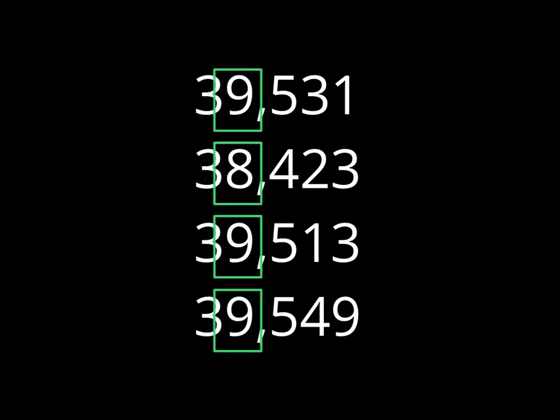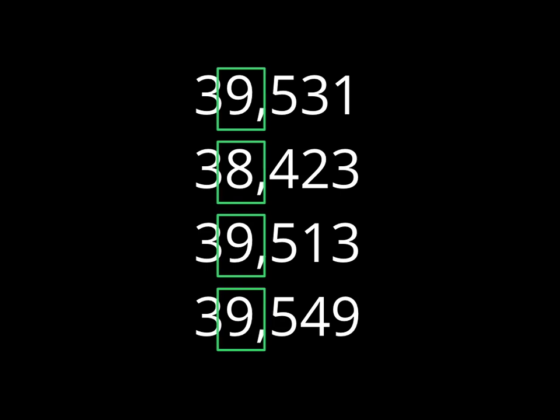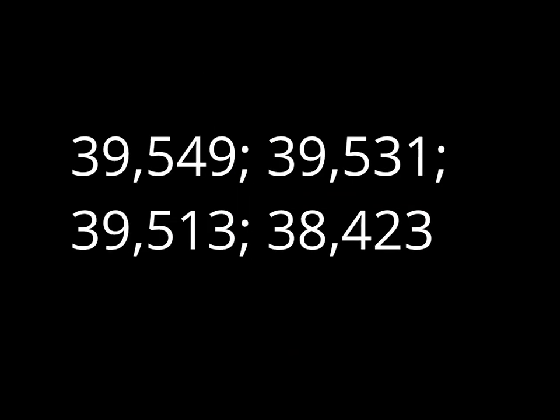We'll start with the ten-thousands place — everything is a three, so we can't tell which number is the greatest there. Remember, we're looking for the greatest number first. When I move to the thousands place, I see that this eight is the smallest of all those digits. So 38,423 is the least number — it's the smallest. The order from greatest to least is: 39,549 is the greatest, 39,531 is next, 39,513 is third, and the least is 38,423.